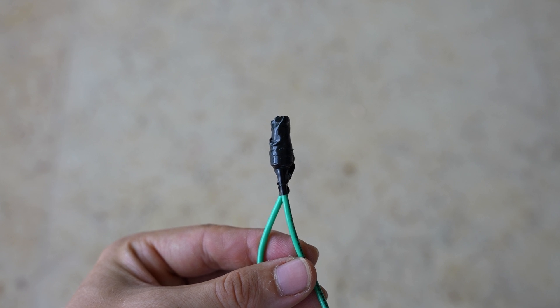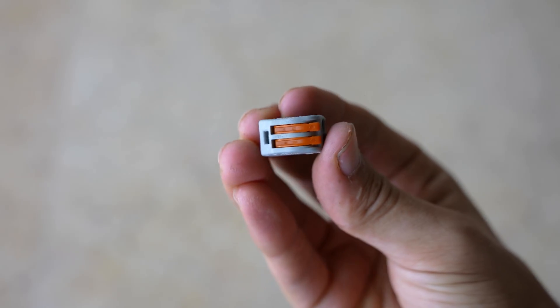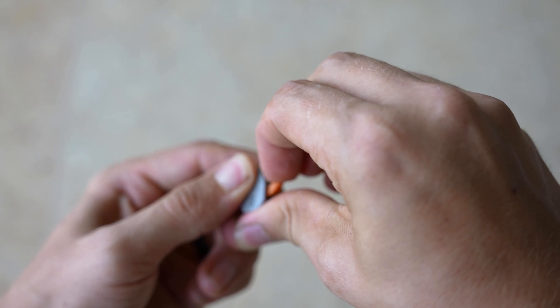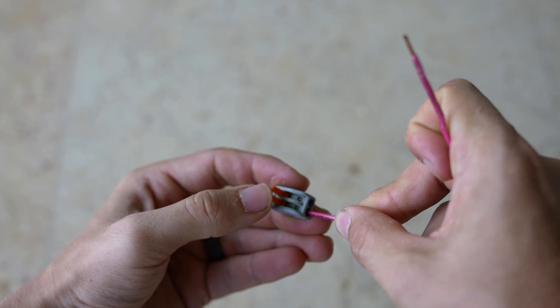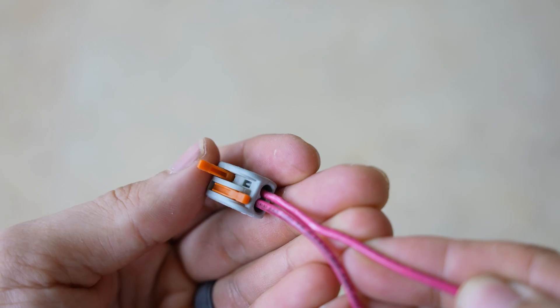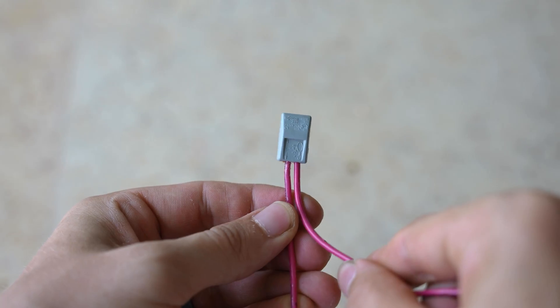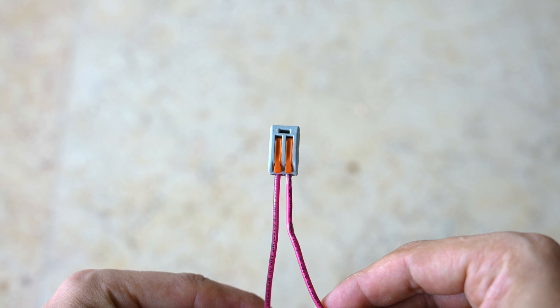Method four is WAGO connectors. Many people like this method the most because of its locking tabs which make it very convenient to connect and disconnect wires quickly. WAGO also sells transparent connectors that help confirm that the wires are fully inserted.